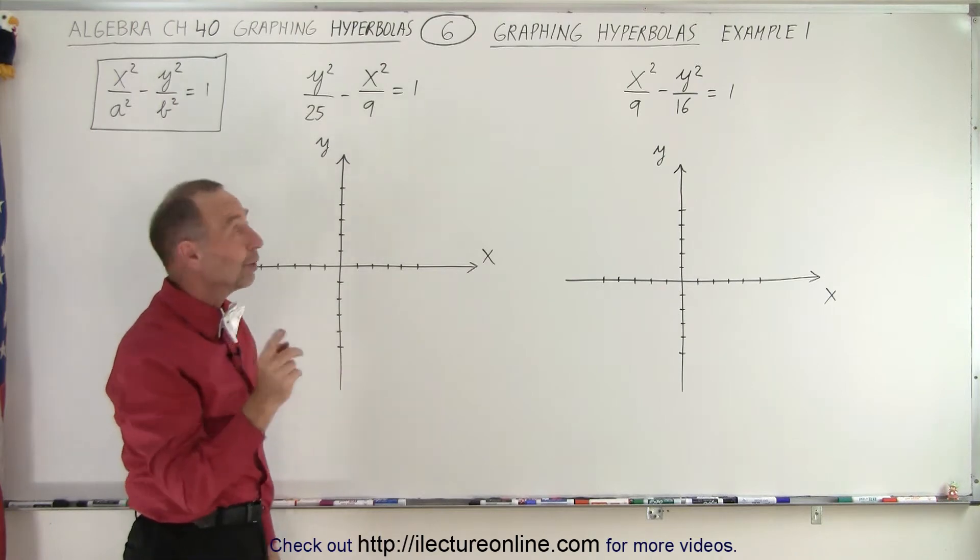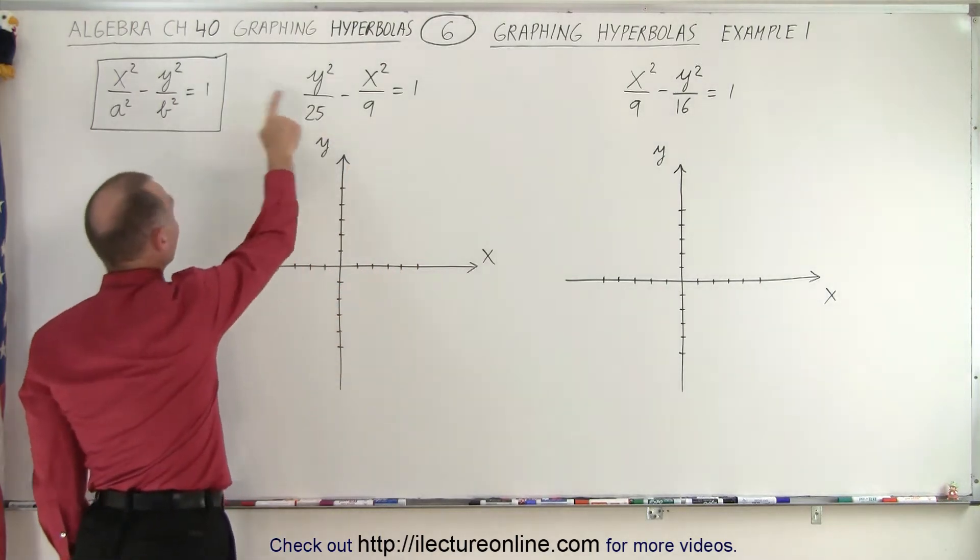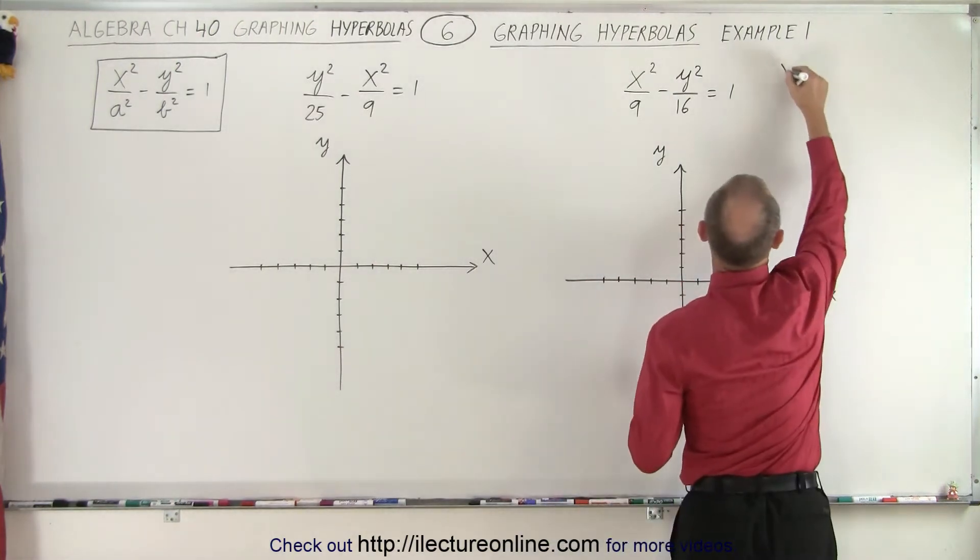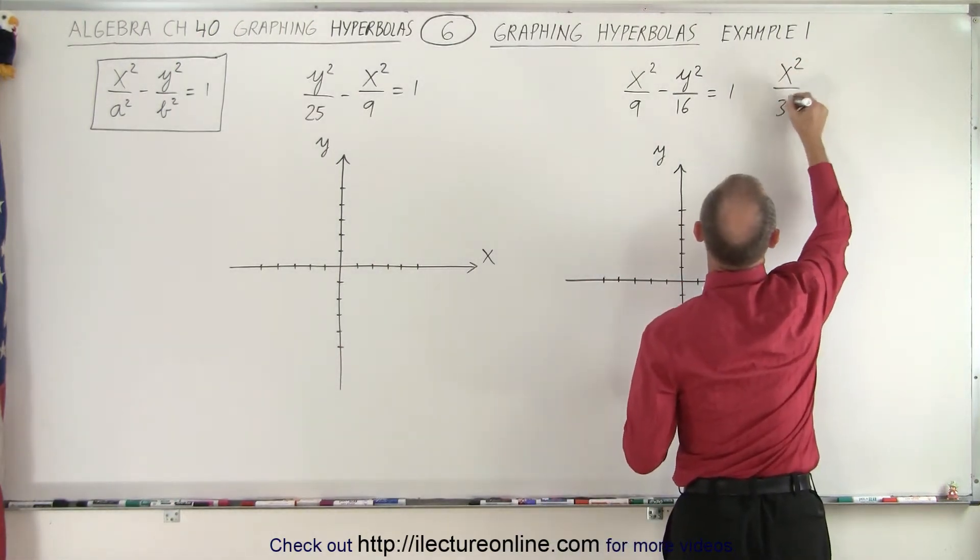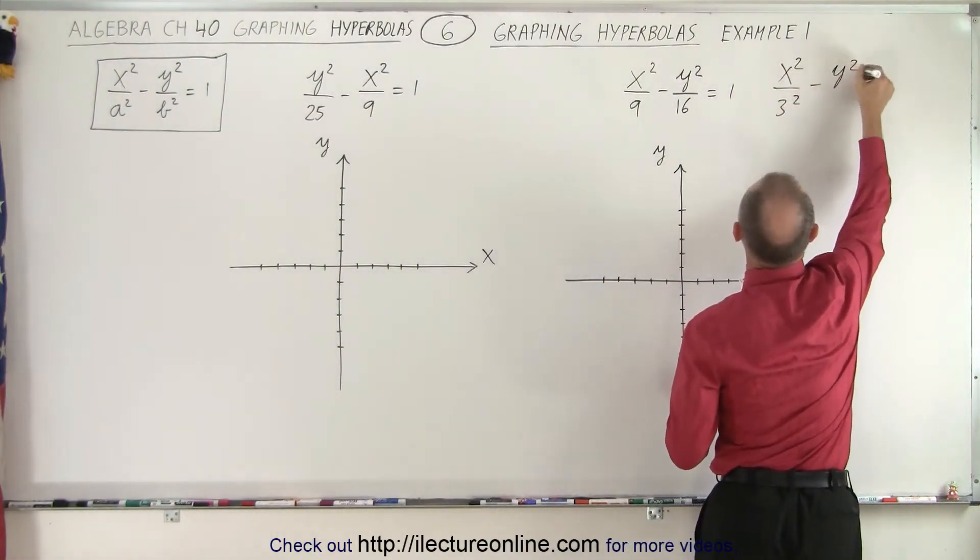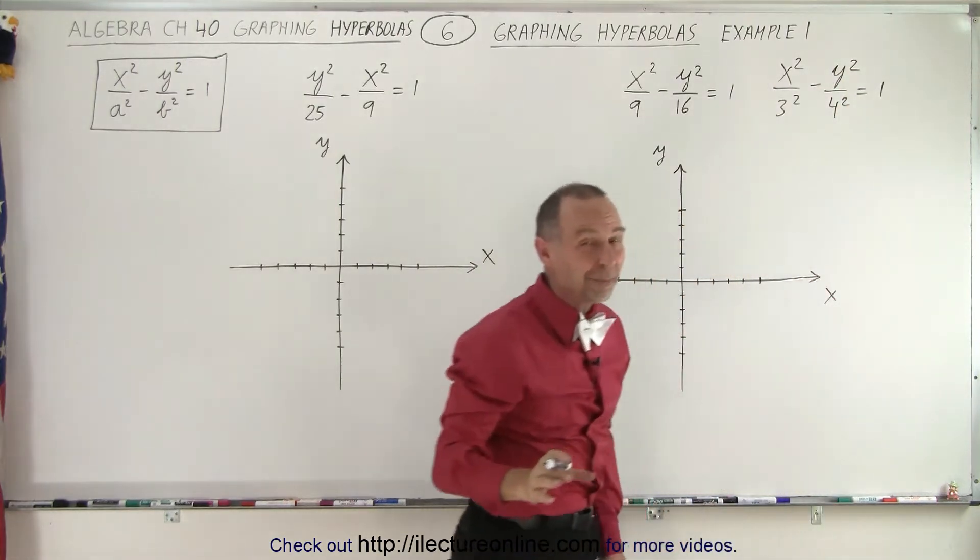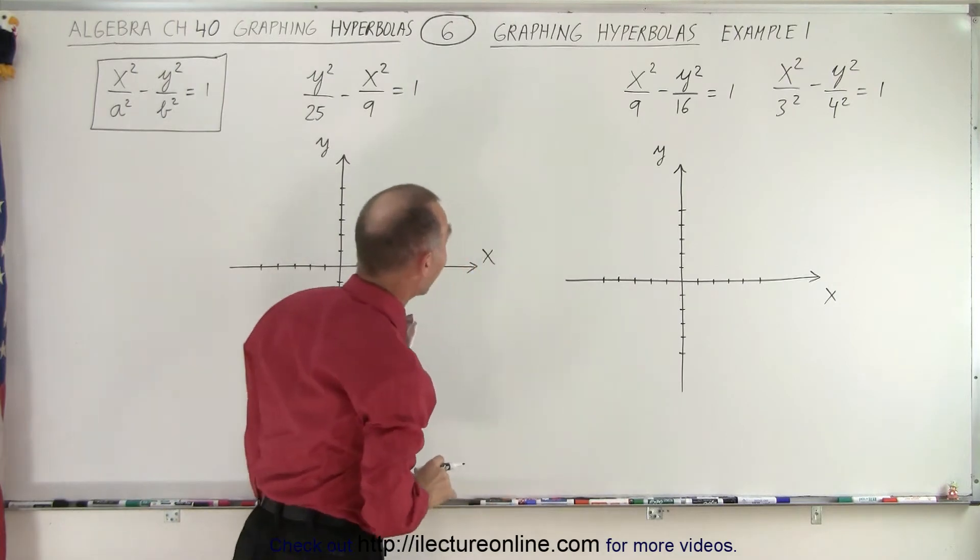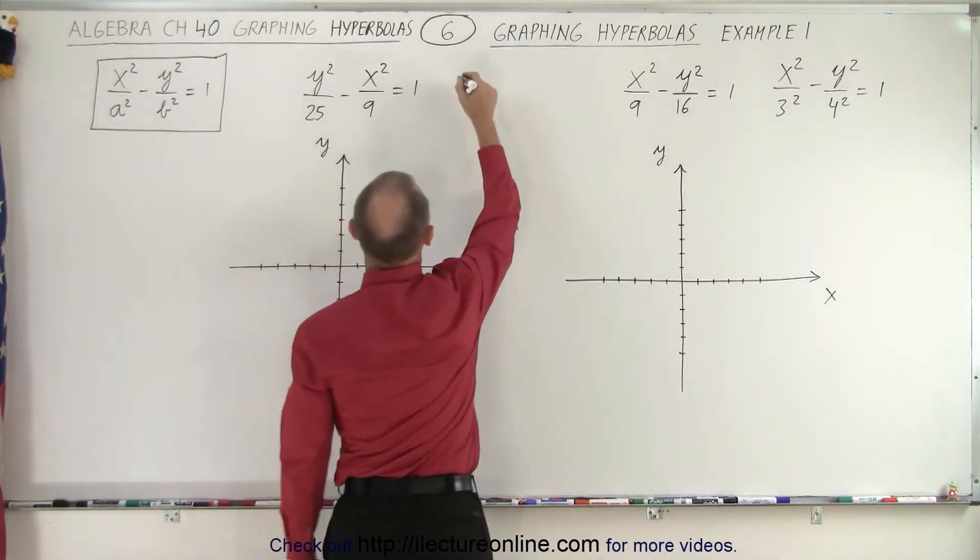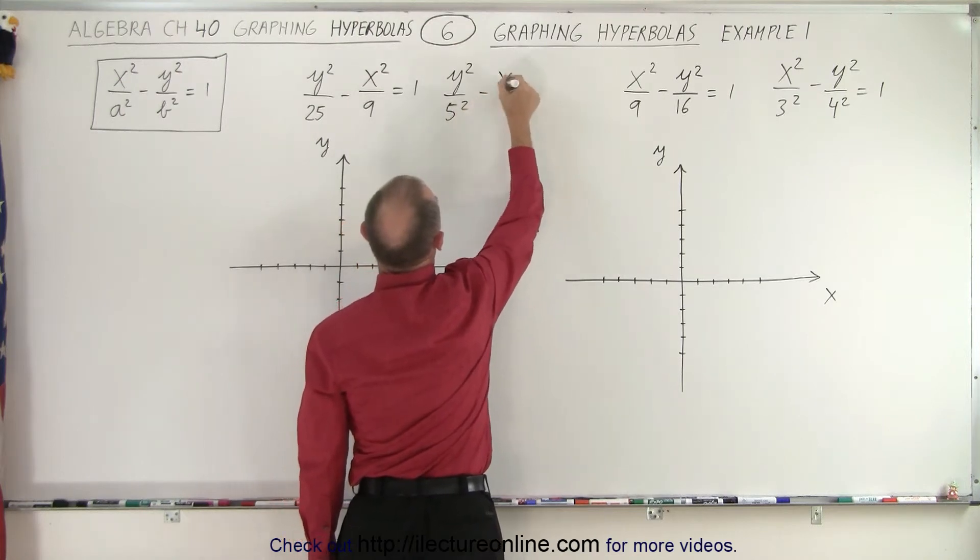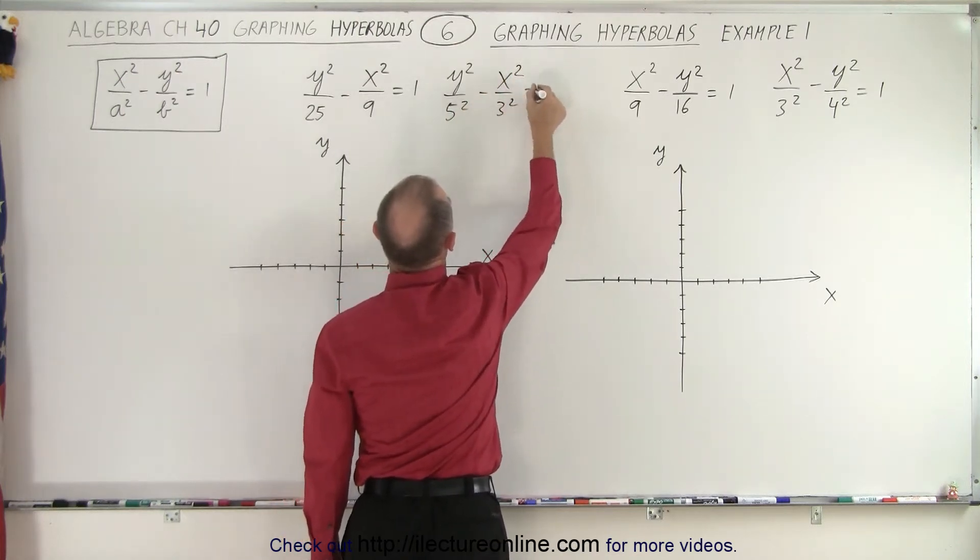What we should do is we should first change the format into the general equation format. So we can write this as x square over 3 square minus y square over 4 square is equal to 1. Notice that our examples always work out just perfectly like that. And then over here we can write this as y square over 5 square minus x square over 3 square is equal to 1.